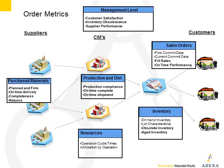The S&OP metrics we just looked at gives you a chance to see the balance between supply and demand, understand your capital equipment utilization, and understand what your investment in working capital will be. When you take a look at the order metrics, what we want to understand is how well you're doing executing to the sales orders that arrive. Let's take a look at the analytic measures we'd want to have for order metrics, starting with the customer.